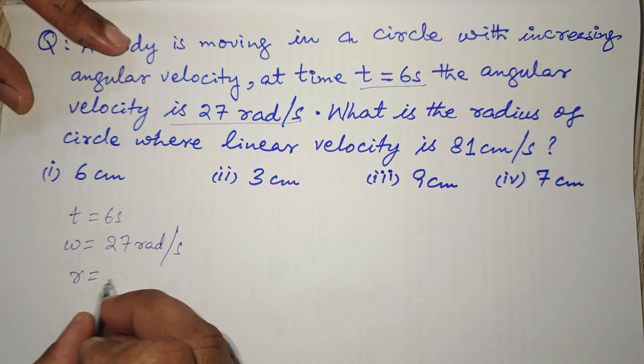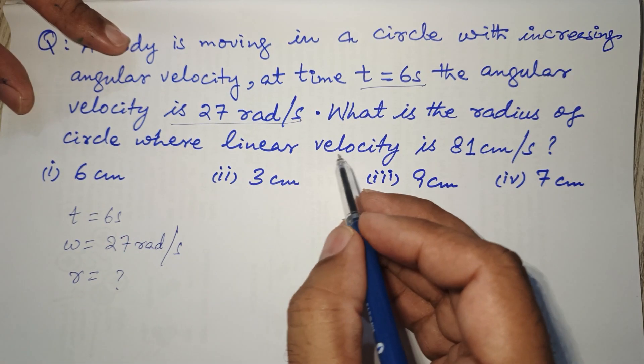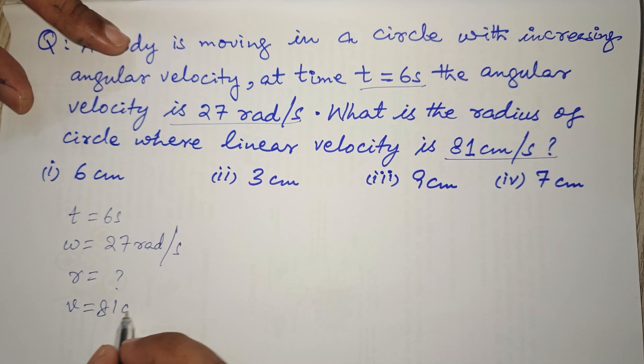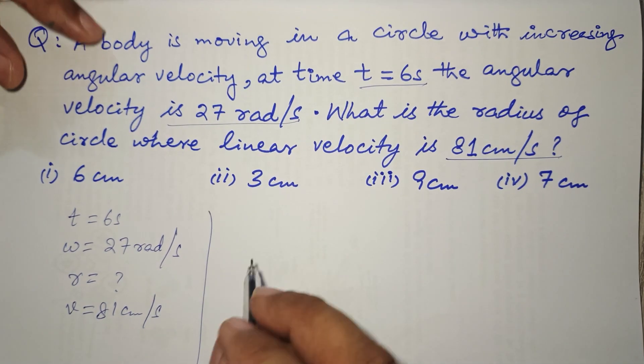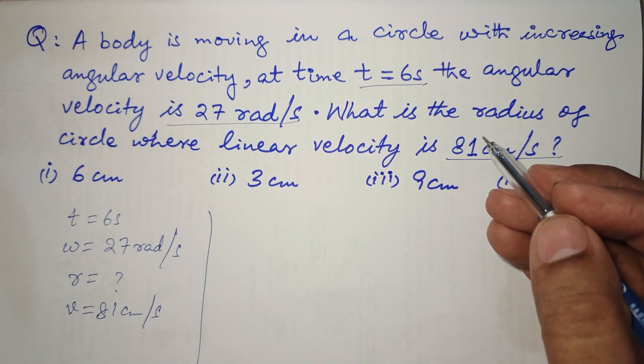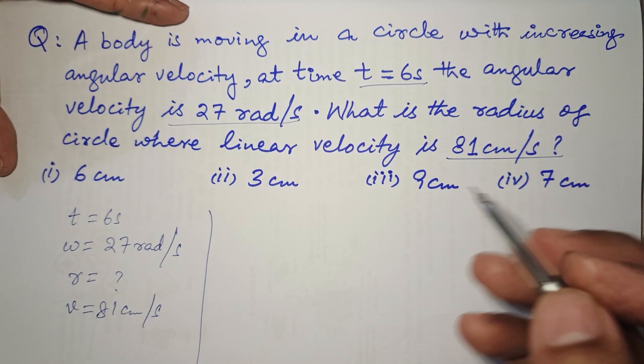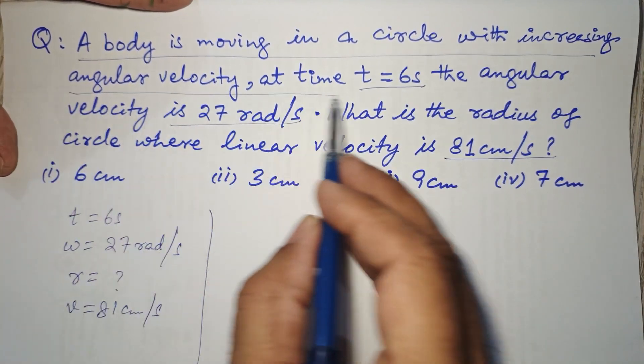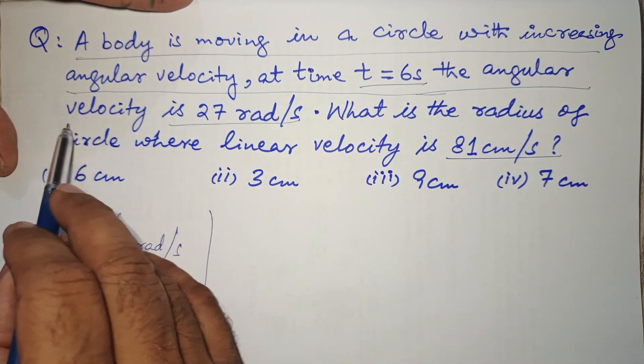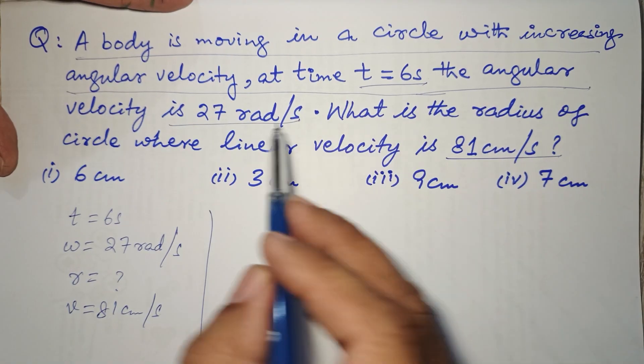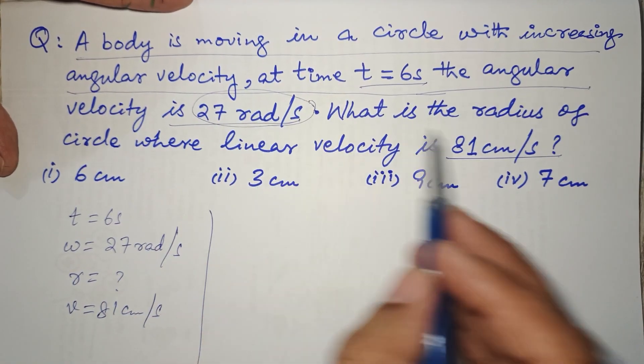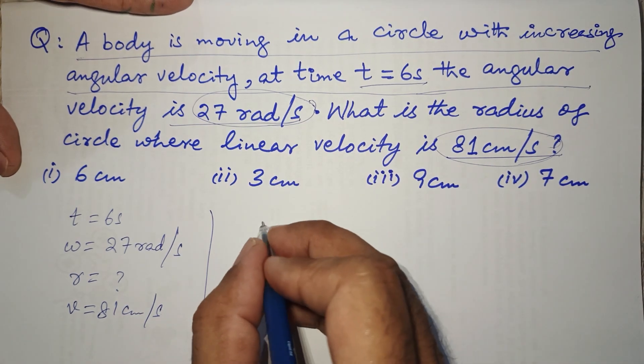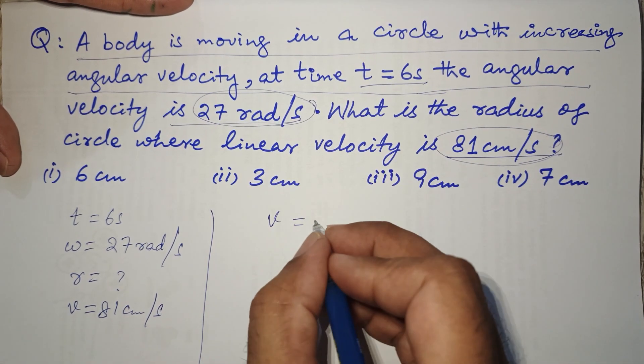We have to find out the radius where linear velocity is 81 centimeters per second. So this is just a tricky problem in which they have given this statement to confuse you people. This has nothing to do with the calculation. Only you need this and this to solve the problem.